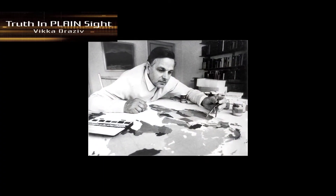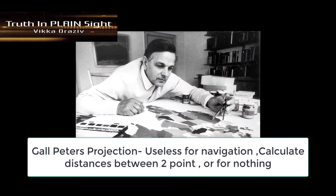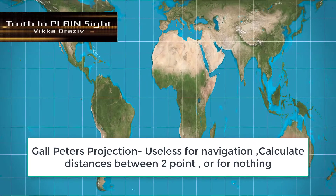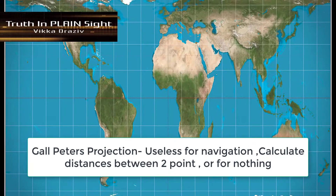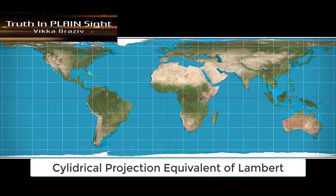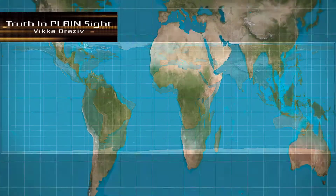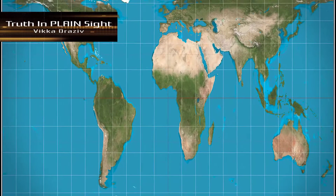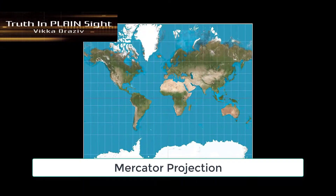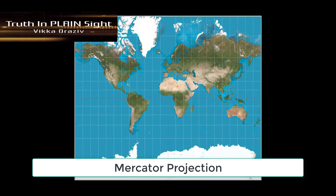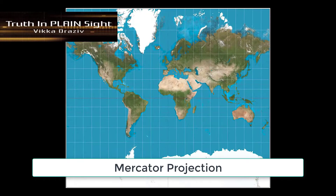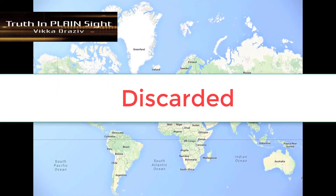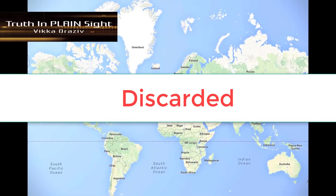Arno Peters generated controversy when he proposed the projection known as the Gall-Peters projection, a slight modification of the cylindrical Lambert equivalent, as the alternative to Mercator's. A 1989 ruling by seven North American geographic groups ruled out the use of all rectangular cylindrical coordinate world maps, including Mercator and Gall-Peters.